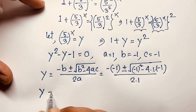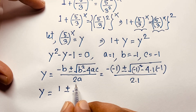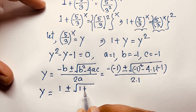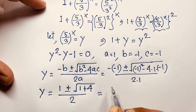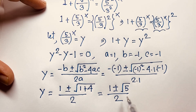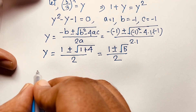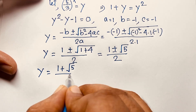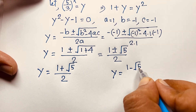Here, b is −1, so −b is positive 1, plus or minus √((−1)² − 4·1·(−1)) over 2·1. That gives us 1 ± √(1 + 4) over 2, which is 1 ± √5 over 2. So we are finding two real solutions: y = (1 + √5)/2 and y = (1 − √5)/2.